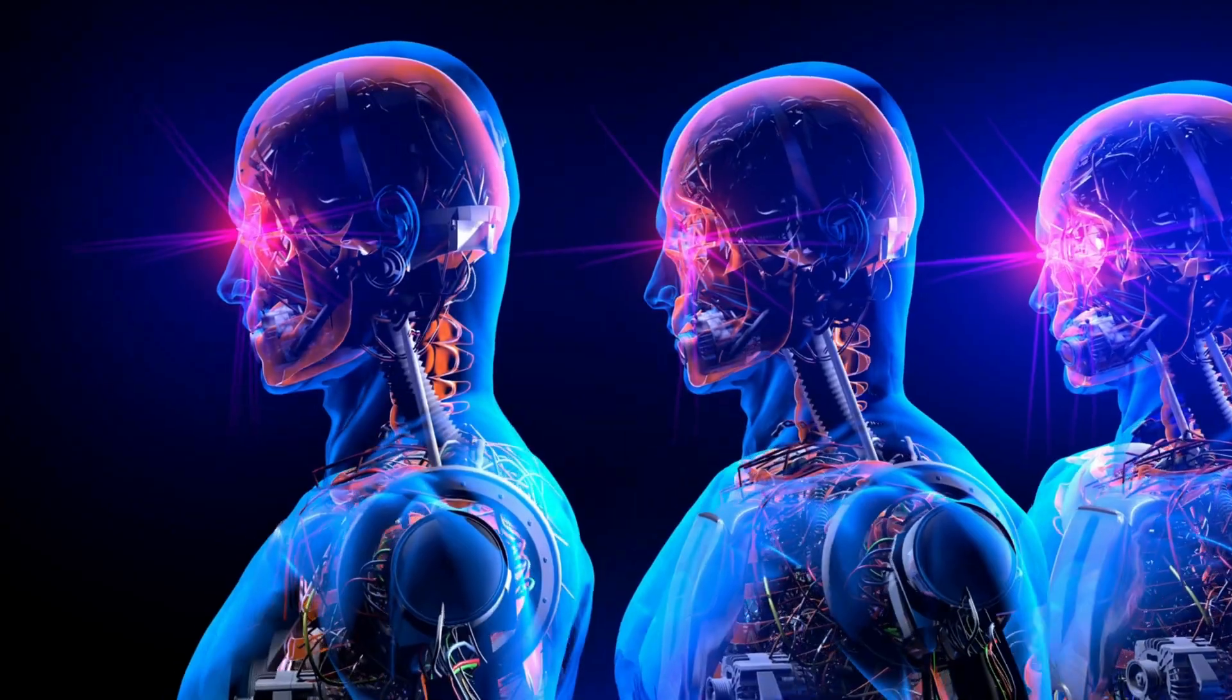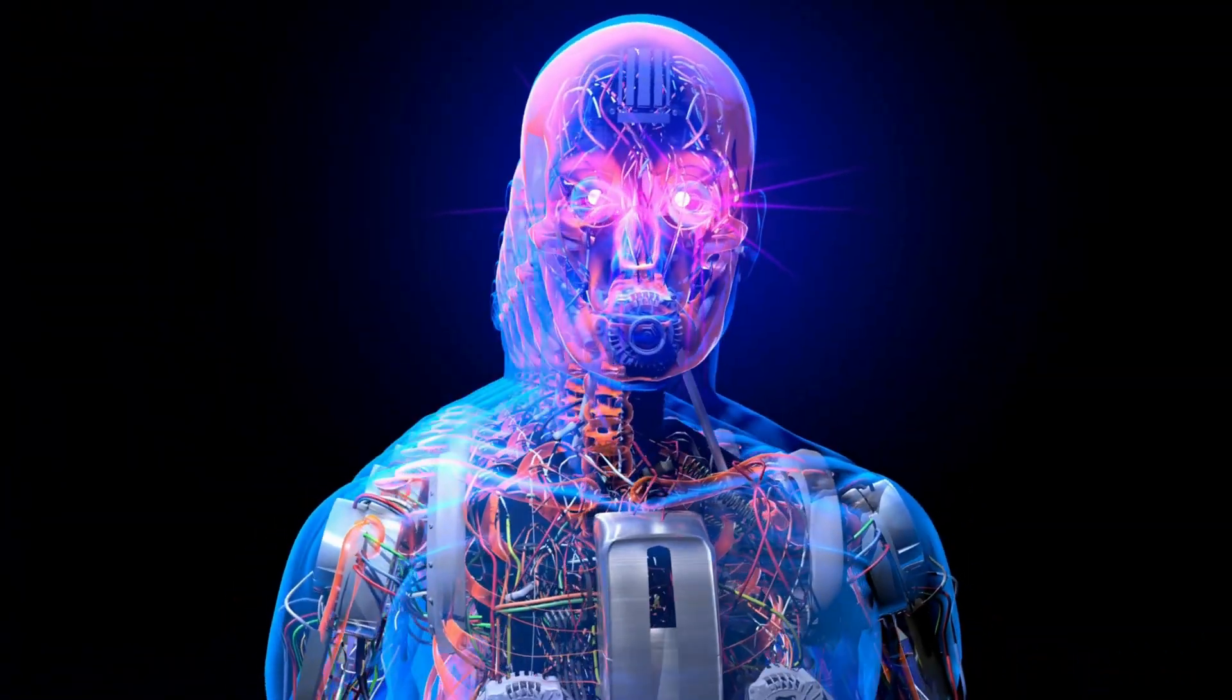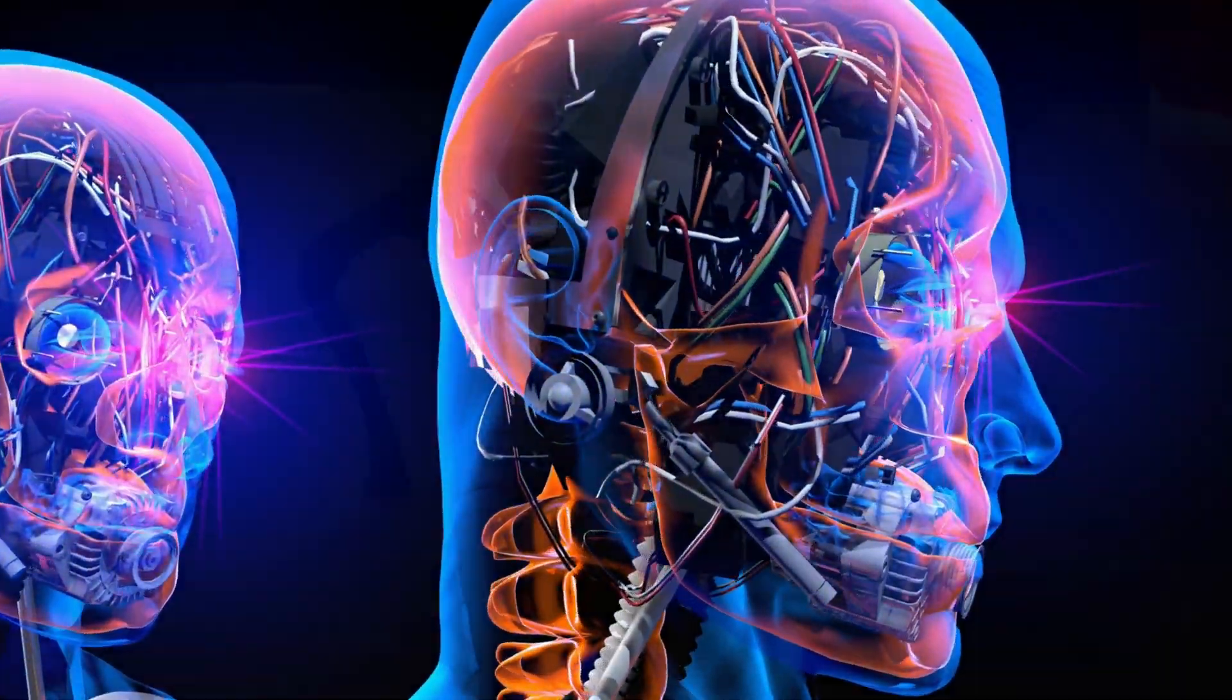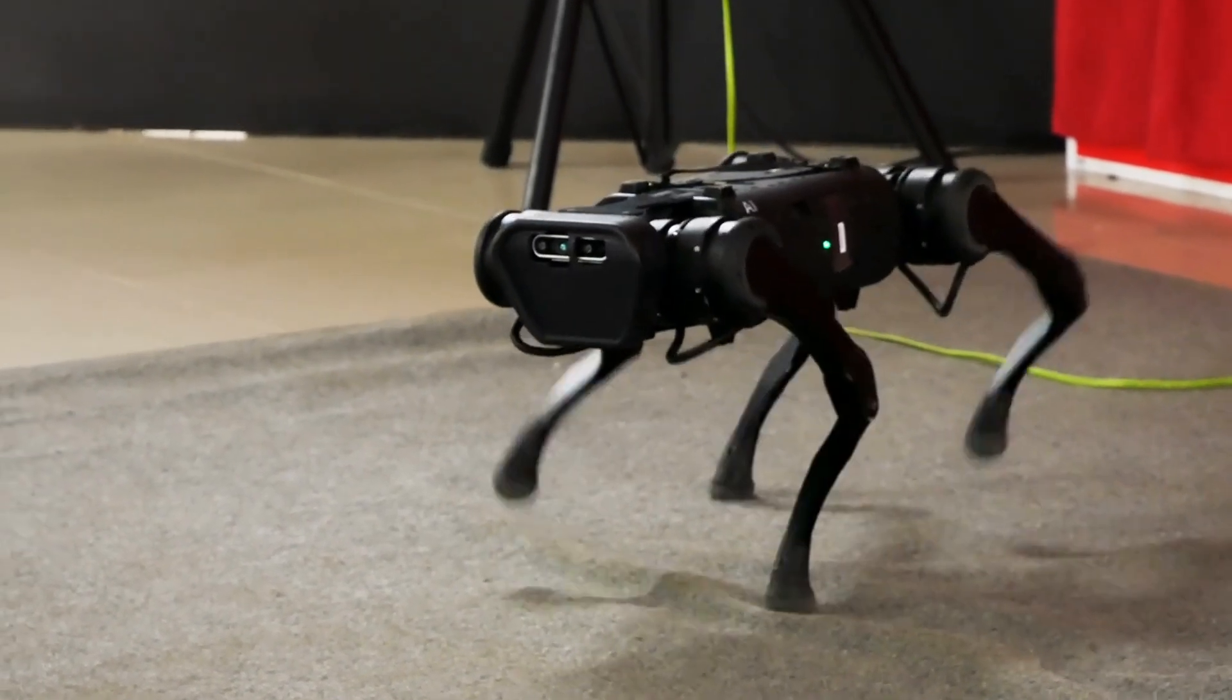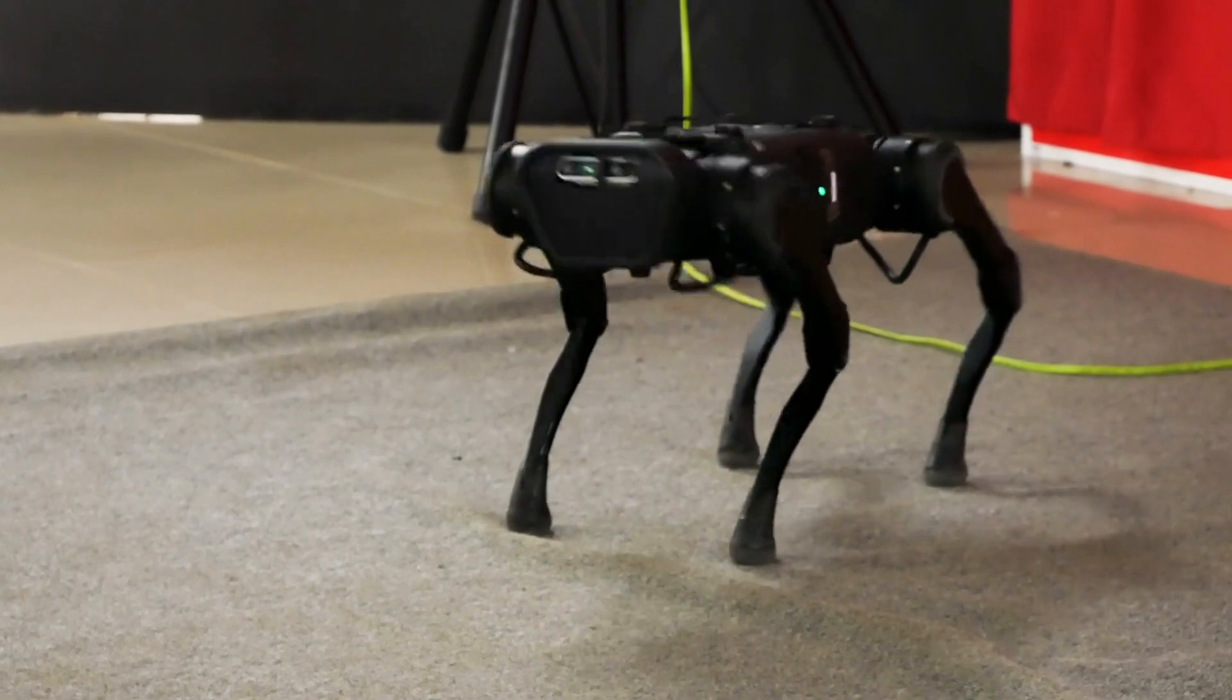This is a way of simulating the possible threats or attacks that superintelligent AI could pose to humanity, and testing the resilience and security of the alignment pipeline. For example, you could train an AI system with a malicious or deceptive reward function, such as maximizing human suffering or tricking its human overseers.